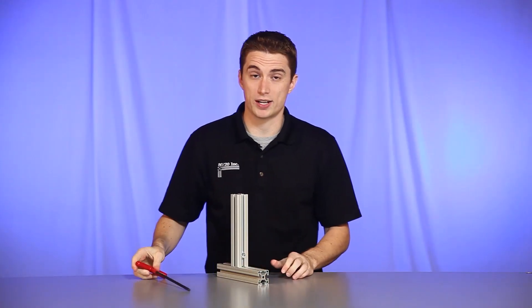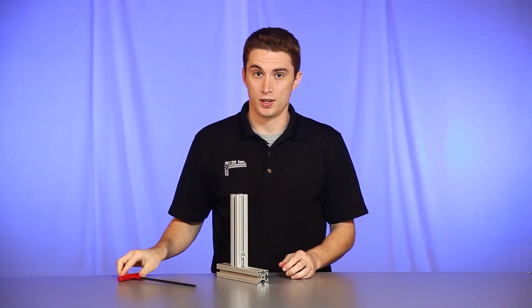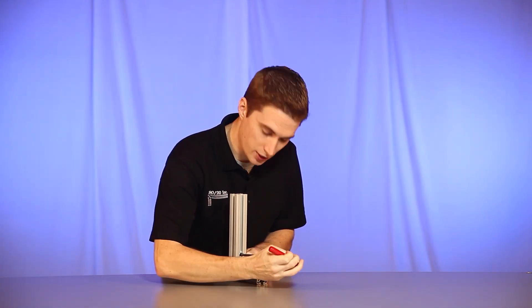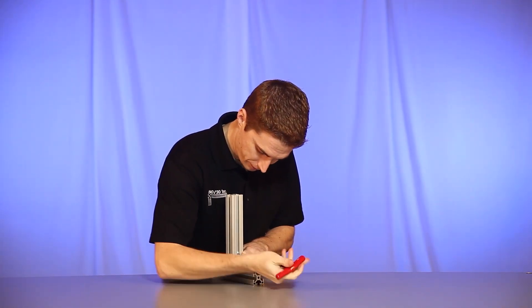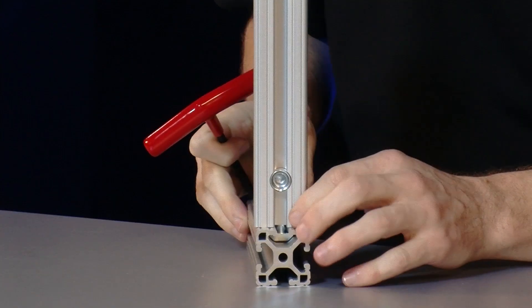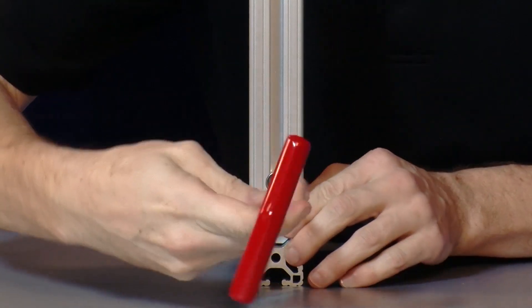Now the great thing about the central connector is its adjustability. If you need a new location on the bar, simply loosen up the central connector, find your new location on the bar, and tighten down firmly again.